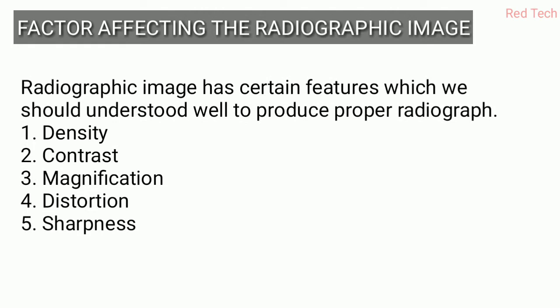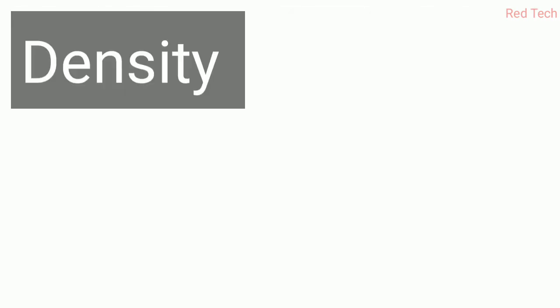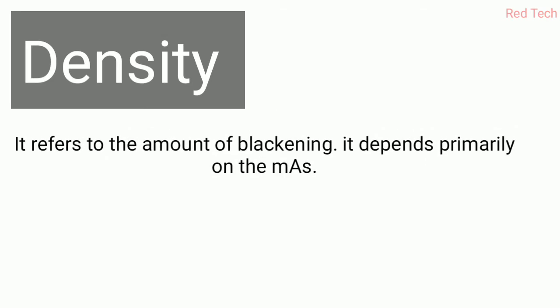Now, factors affecting the radiographic image include many features to understand: density, contrast, magnification, distortion, and sharpness. I will discuss every point in detail. Number one is density — basically, density is the amount of blackening in the radiographic image.